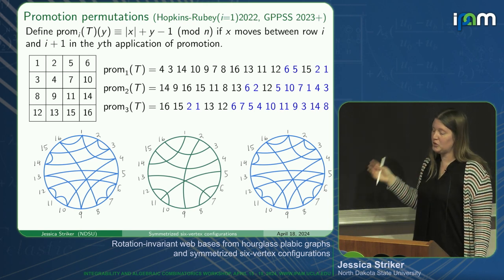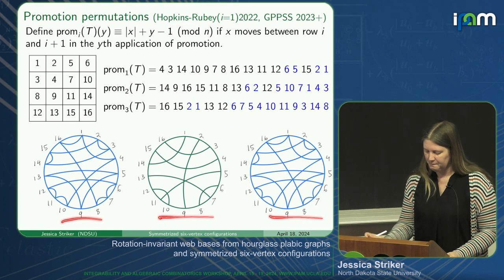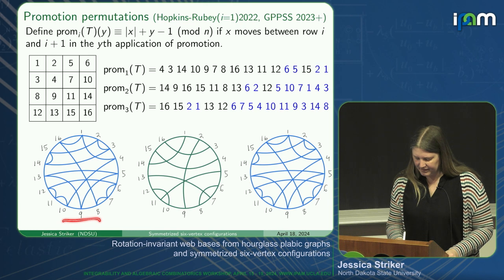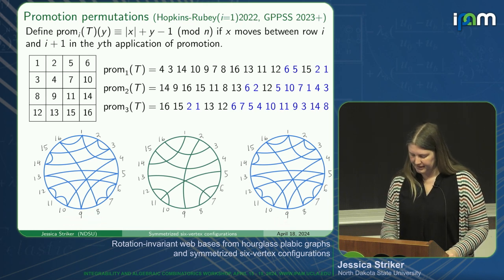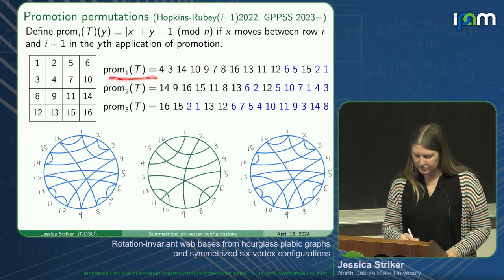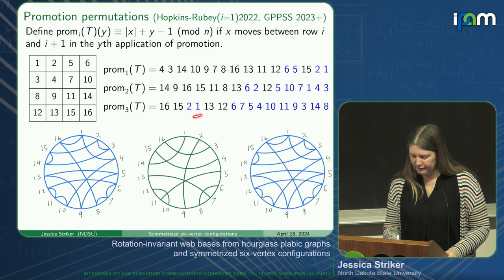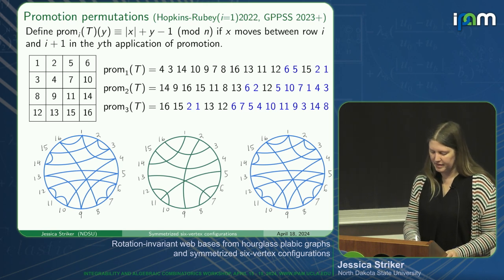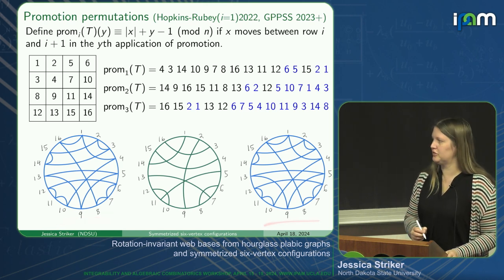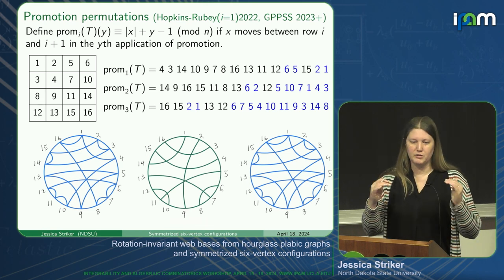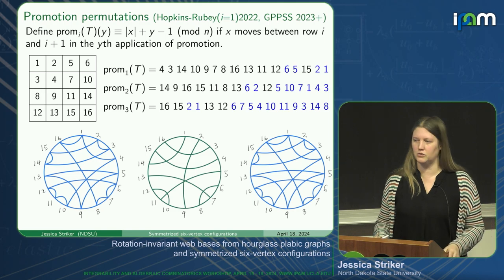You can construct these promotion permutations, and I've drawn them here. You can draw a permutation on a circle—you might have noticed that the first and last ones look the same. Promotion permutation one has one going to four, and promotion permutation three has four going to one, so they are inverses of each other. Promotion permutation two, since we have a middle one, is its own inverse—it's an involution.